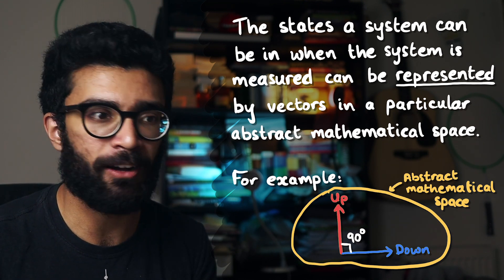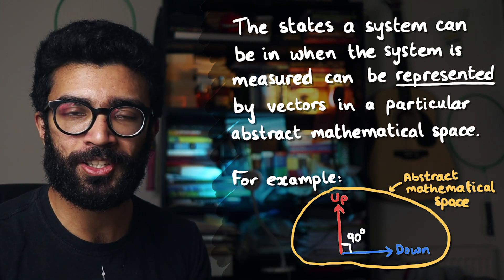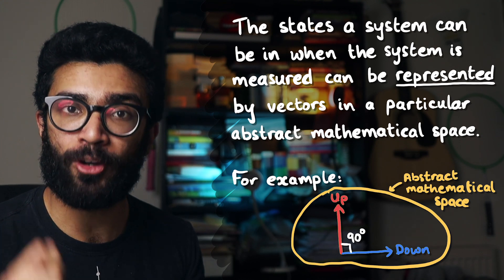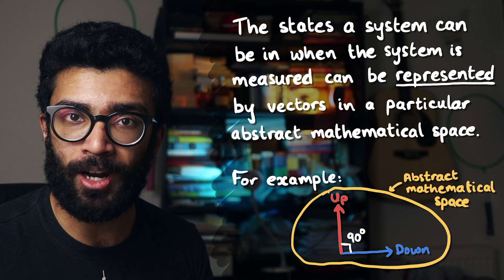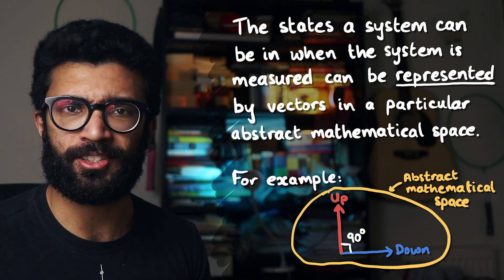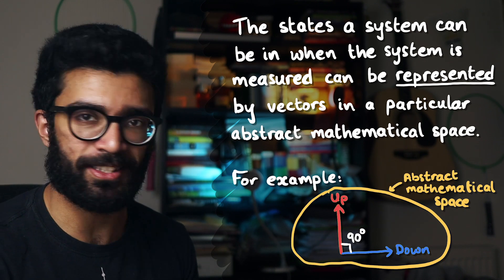So in that video, I said that we could represent spin up as being a vector in some random abstract space, pointing in the upward direction, and spin down could be a vector that was orthogonal or at right angles to this vector, which means it would have to either point right or left or in and out of the screen, doesn't matter which, but those two are a bit too complicated. We'll just stick with pointing to the right for now.